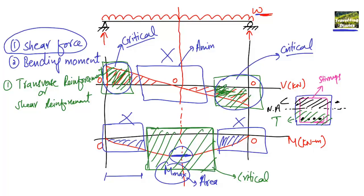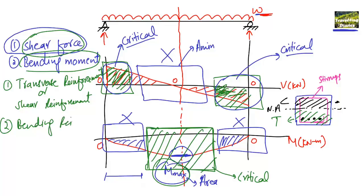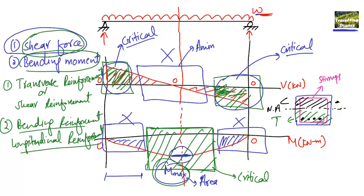To summarize: we need the shear force diagram to design our shear reinforcement, which are the stirrups. We need the bending moment diagram to define and provide the bending reinforcement, which is also called the longitudinal reinforcement in beams, used to resist bending moments.